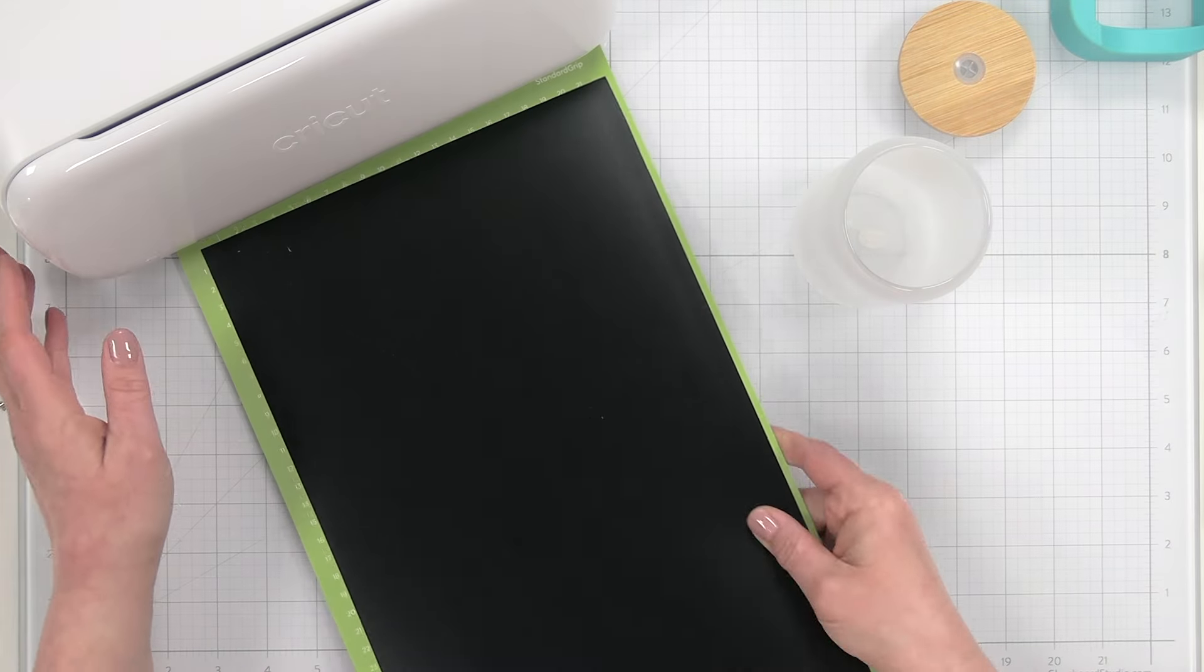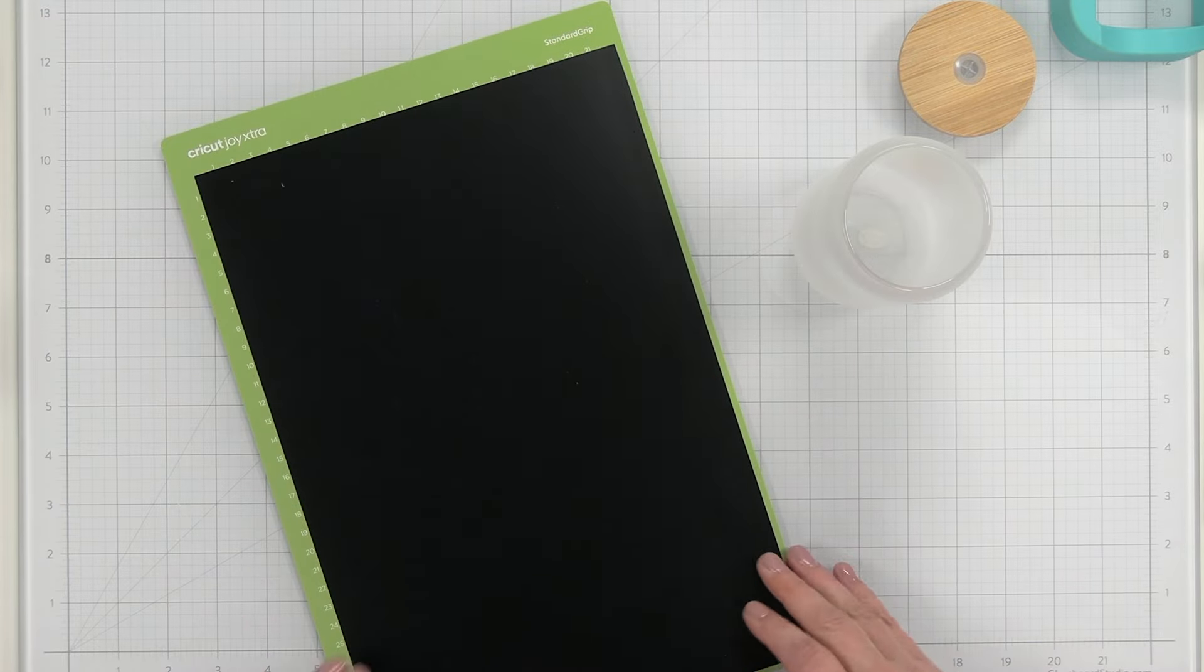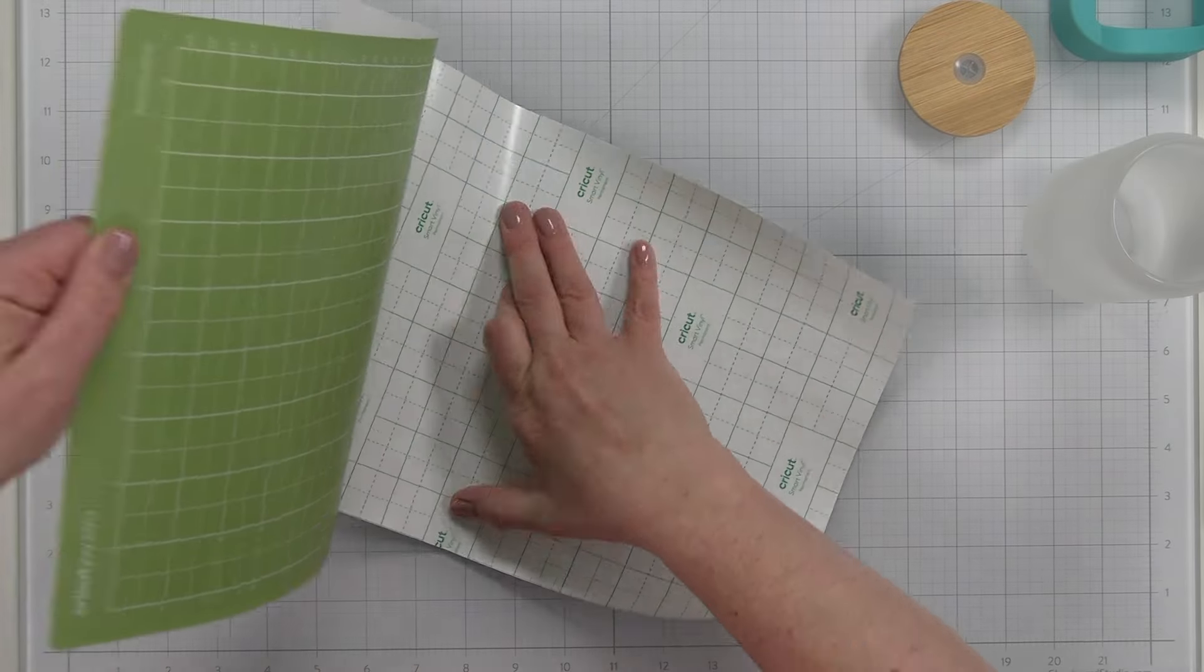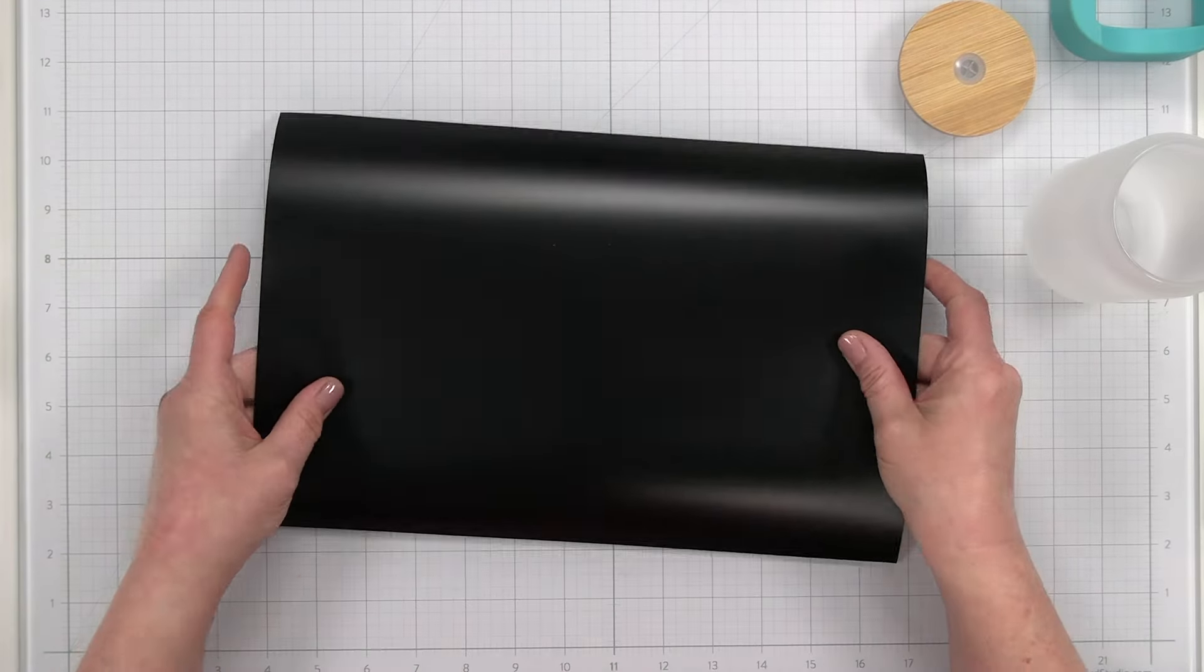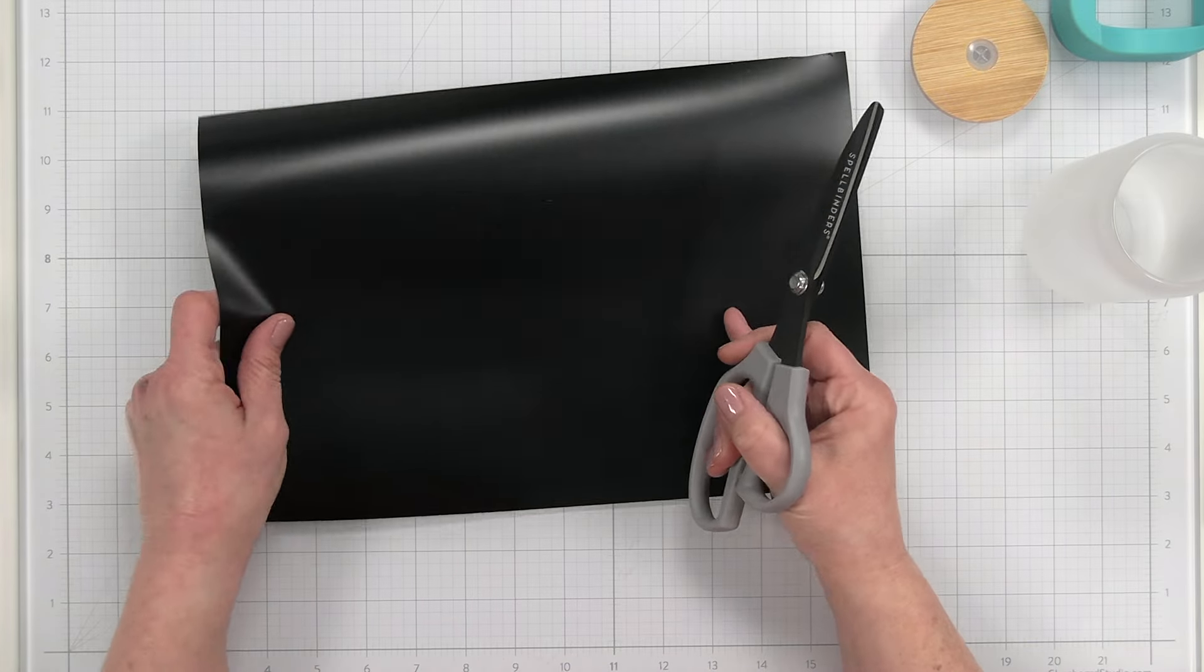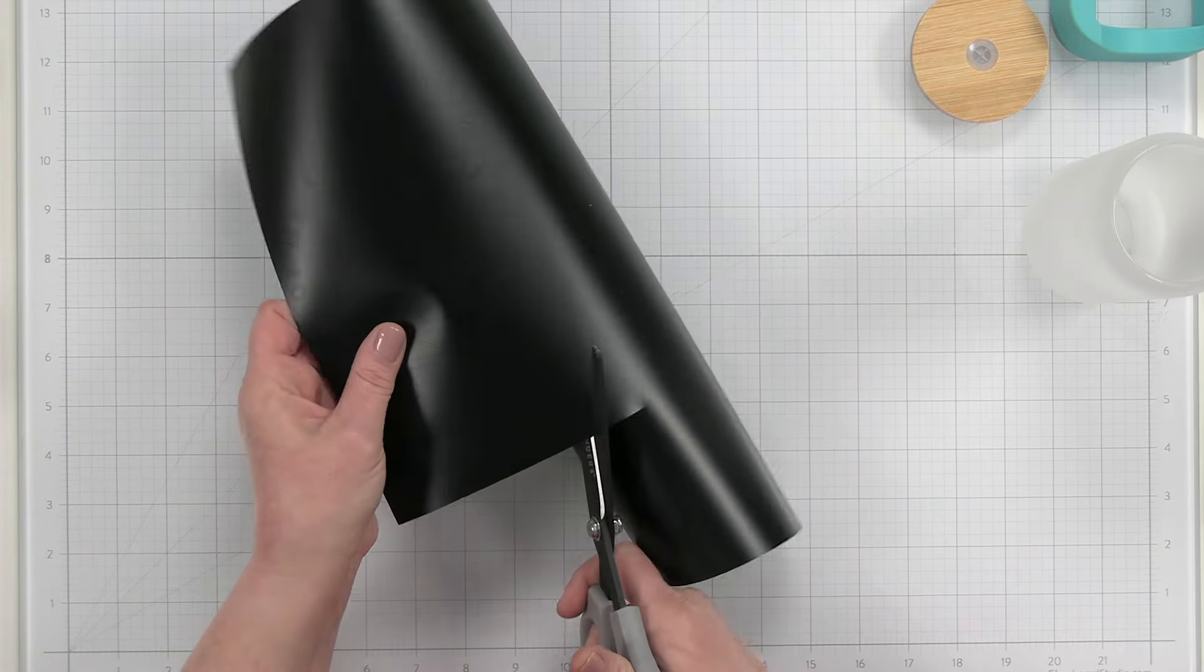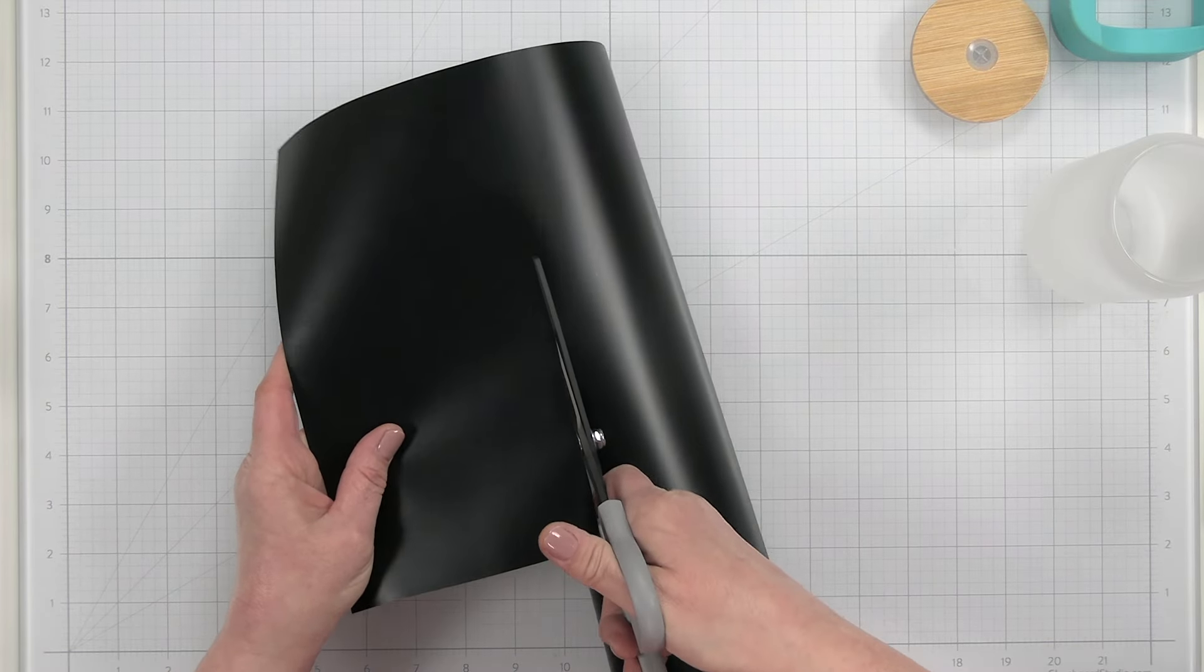Okay, so that is all done cutting. I'm just going to move my machine out of the way. And there we go. So the first thing I'm going to do is I'm going to trim this out a little bit so it is not quite the full piece. And then I can save my scraps for another project. I just want to make sure I don't cut into my design at all.